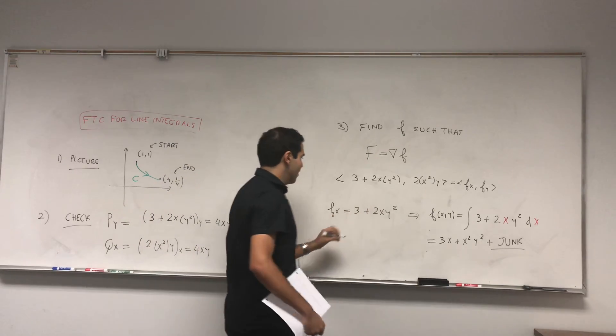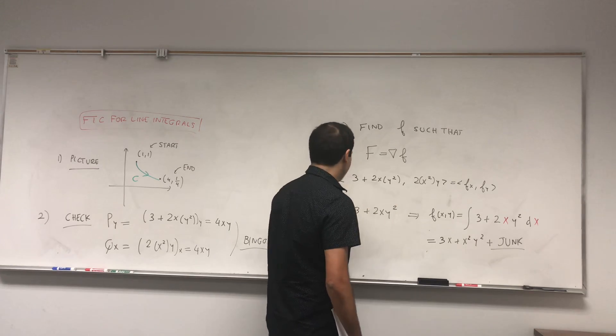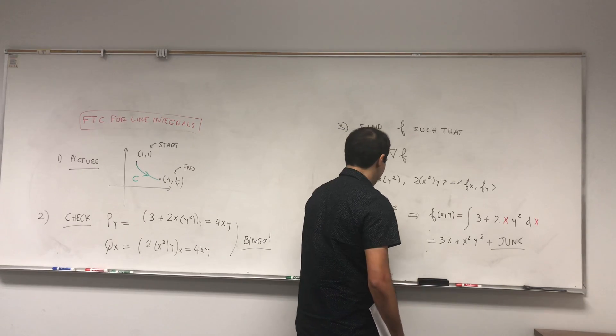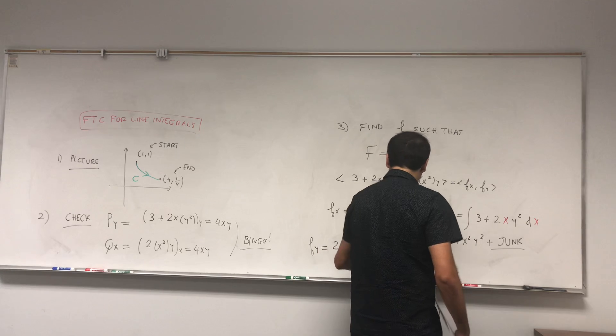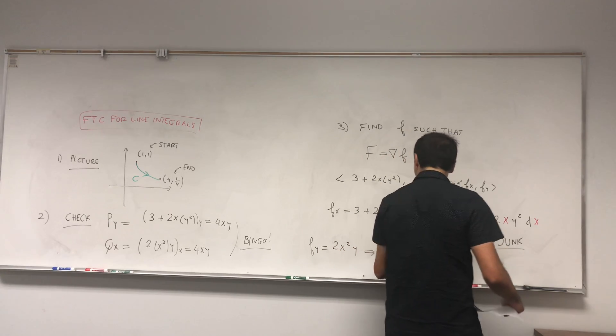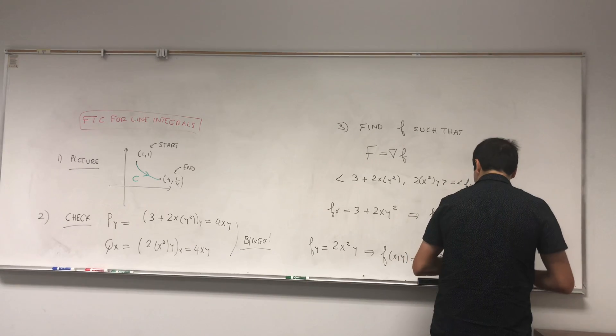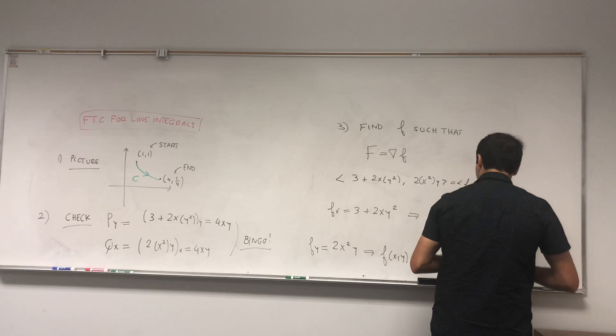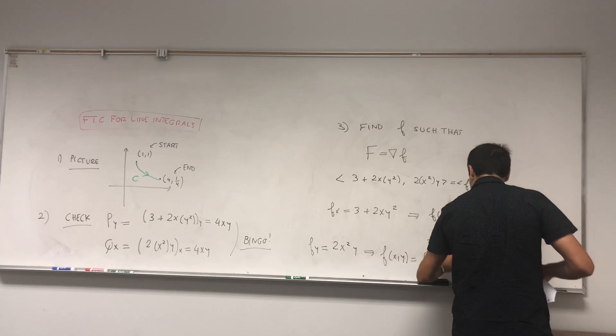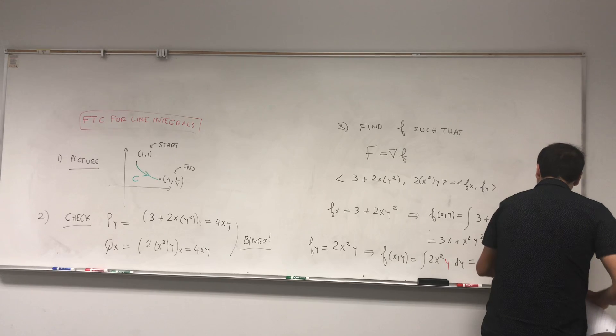Then similarly, fy is 2x squared y. And so let's integrate that. So f of xy becomes integral of 2x squared y dy. And that becomes x squared y squared plus some other junk.